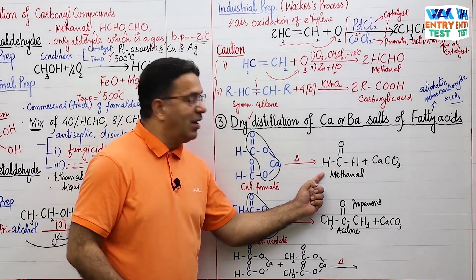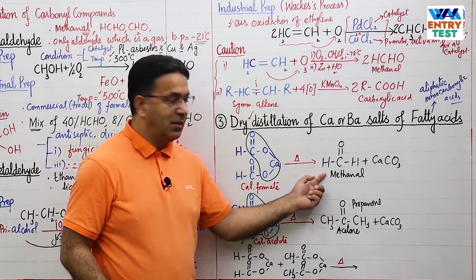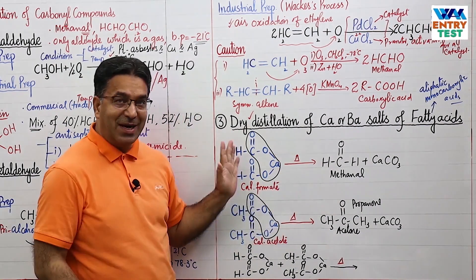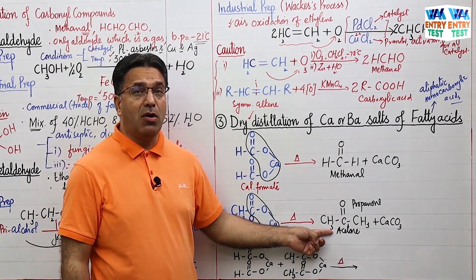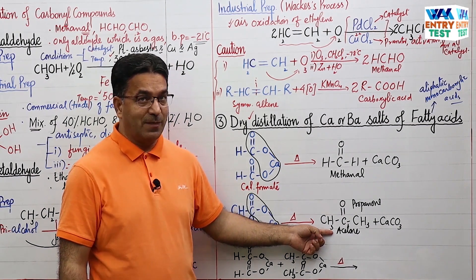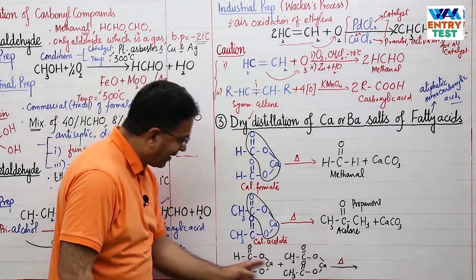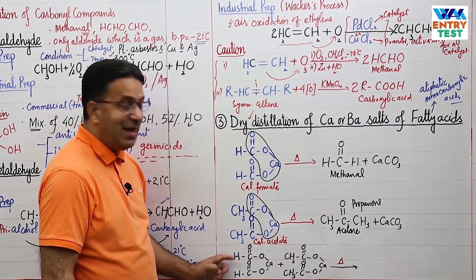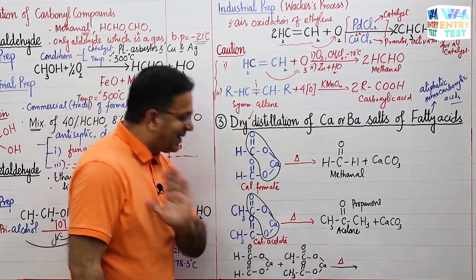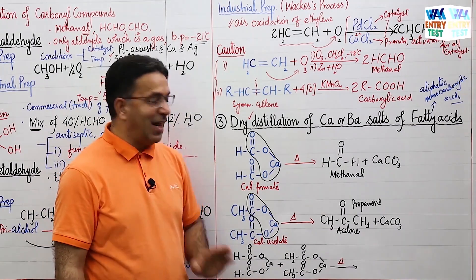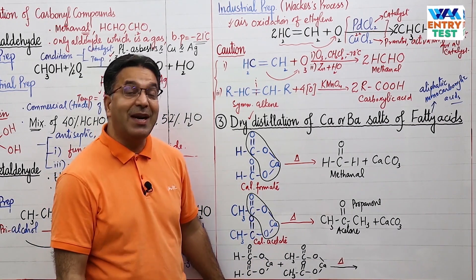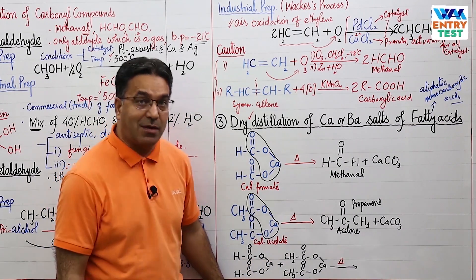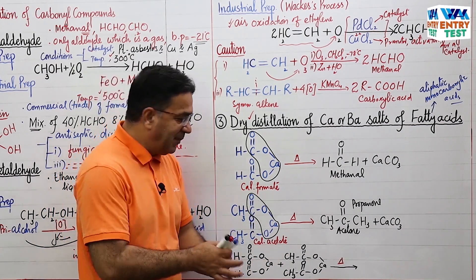So from calcium formate alone you get only methanal (formaldehyde), and from calcium acetate alone you get pure acetone. Now if you take a mixture of calcium formate and calcium acetate and do dry distillation, what happens?